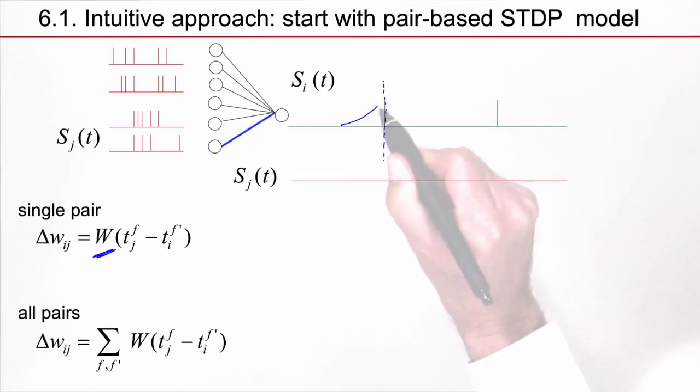So let's center the window here. And then I have a part on this side, which is pre before post. t_j^f is smaller than t_i^f. This gives a positive change. And the part here, post before pre.